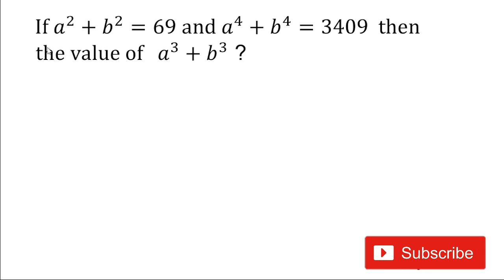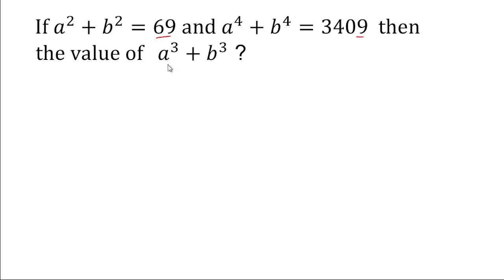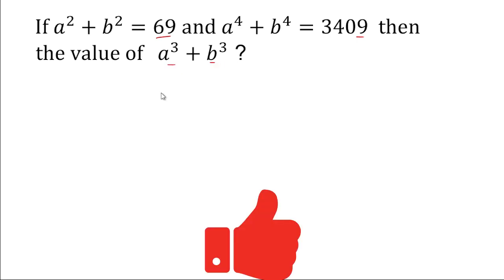Hey friends, welcome back! Today in this video we will solve this algebraic expression. The given expression is: if a² + b² = 69 and a⁴ + b⁴ = 3409, then what is the value of a³ + b³?